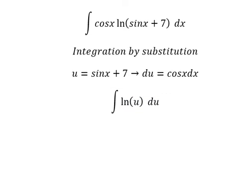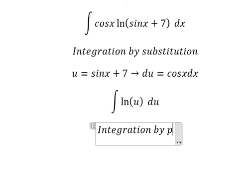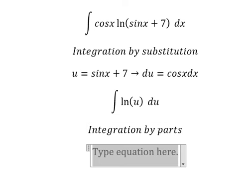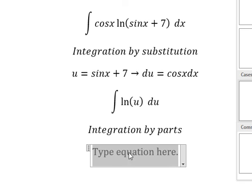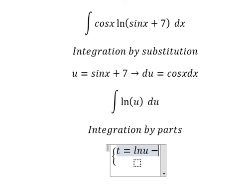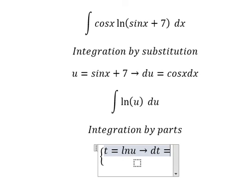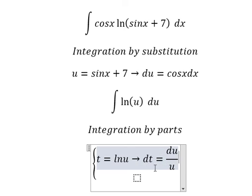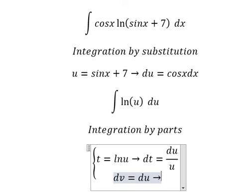Next, we can use integration by parts. I will put t equals to ln u. Later, we take the derivative of both sides, and we have du over u. dv equals to du, so the integration of this one gives us v equals to u.